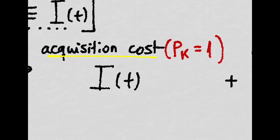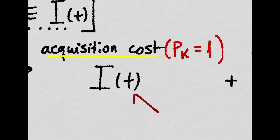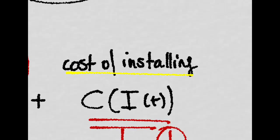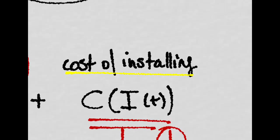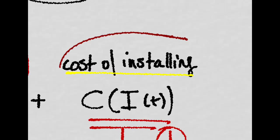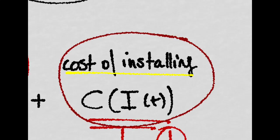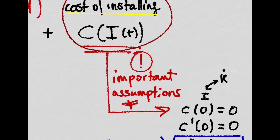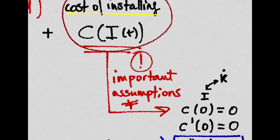It first has to acquire new capital, which we assume has a fixed price of one. And then, and this is key, the firm also faces some costs of installing this new capital. And there are some very important assumptions behind this internal adjustment cost function.